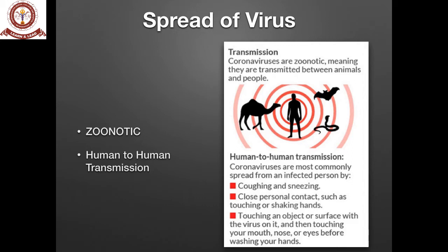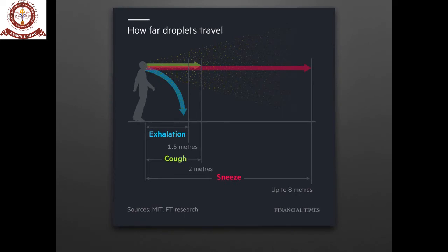An important concept is the distance these droplets travel. When a patient coughs, droplets travel approximately two meters. When a patient sneezes, droplets can travel up to eight meters. That is why the WHO has recommended social distancing of around six meters — following this reduces the chances of being infected in the community.